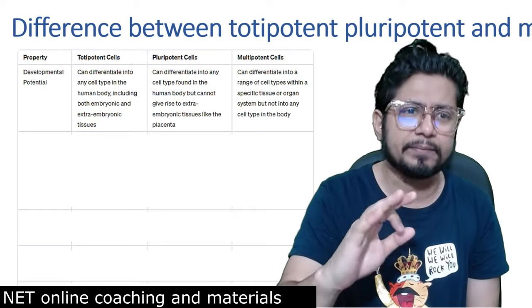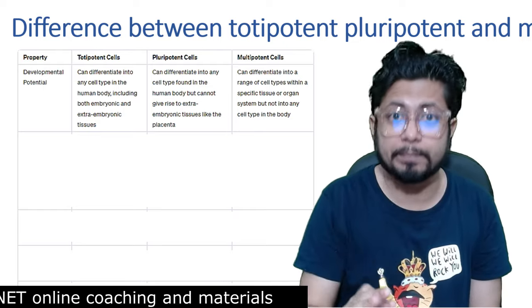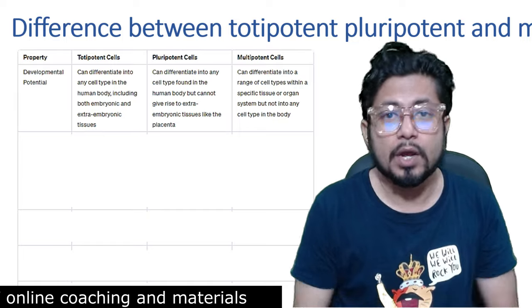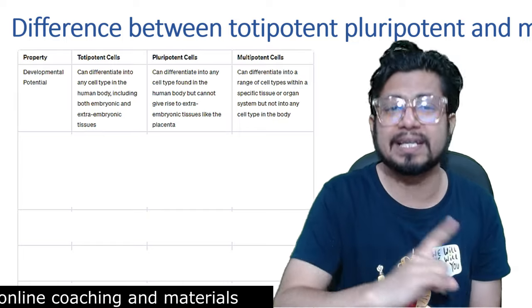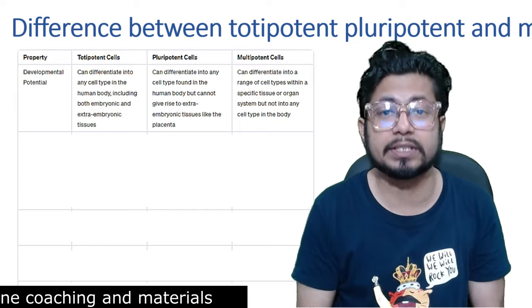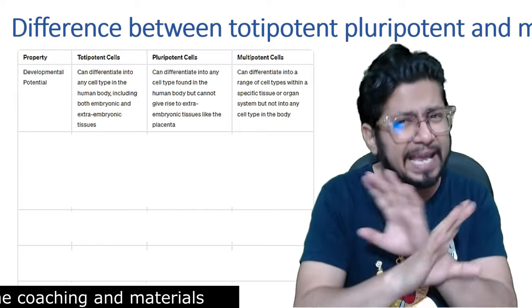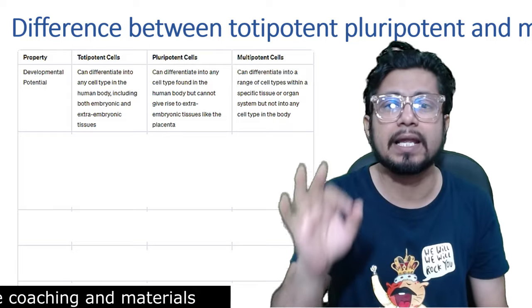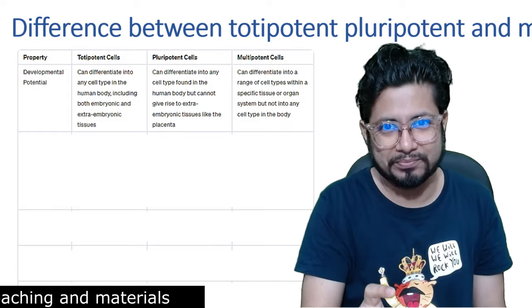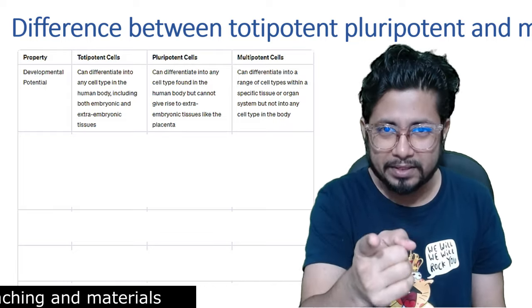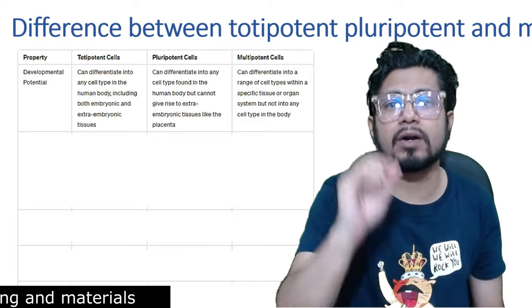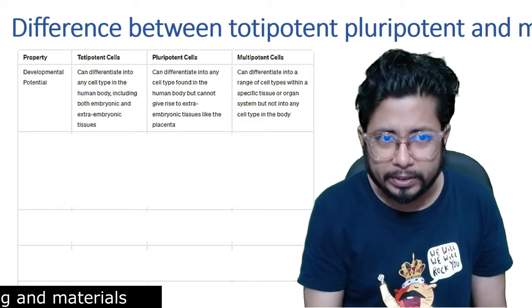But a pluripotent cell can produce any cell type except extra-embryonic tissue. A pluripotent cell can never produce extra-embryonic tissue — it can only produce any kind of cell, any type of cell of embryonic tissue. That's the major difference between totipotent and pluripotent.